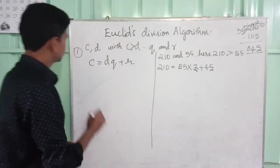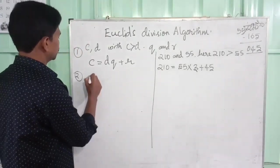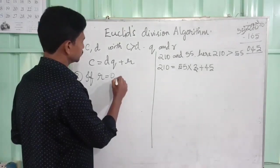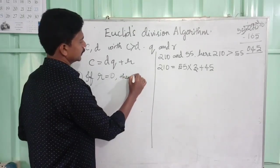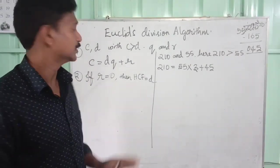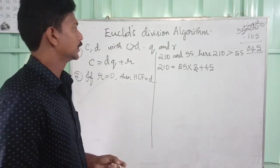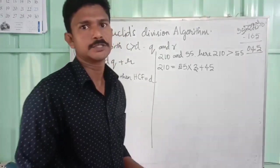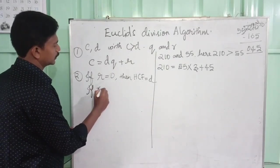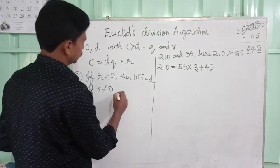Second step in the Euclid's division algorithm: you have to check whether R is equal to zero. If R is equal to zero, then HCF is the divisor. Here the remainder is not zero, it's 45. So what do we have to do next? In this case, R is not equal to 0, then we have to apply the Euclid's division lemma.